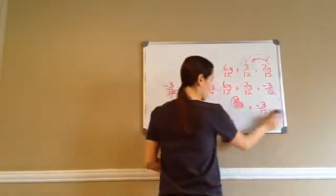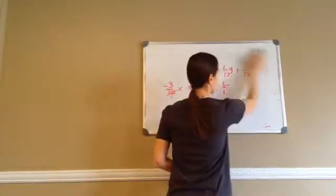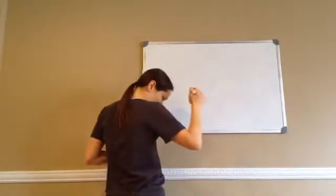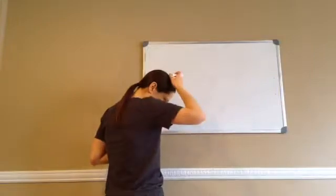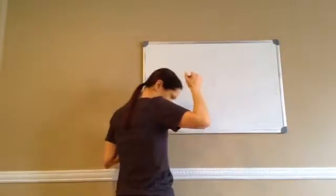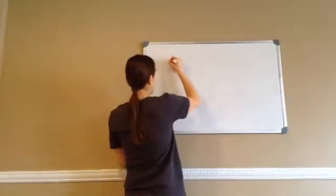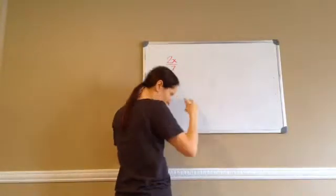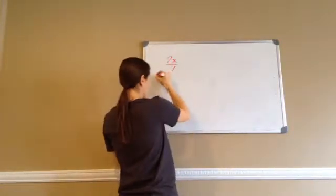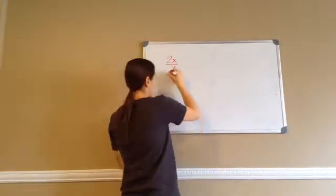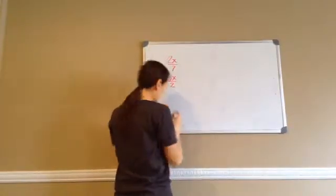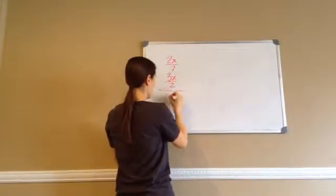Let's do one more of those kinds just to make sure you're getting it. Then there's another part they're going to teach you. Here it goes — this is 78.2. So: 2x over 7, I'm going to write it vertically, minus 3x over 2 equals 1/3.